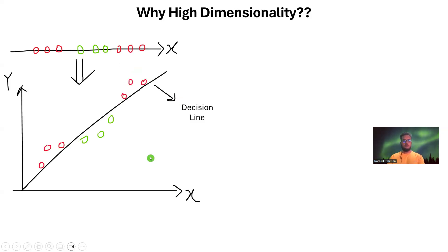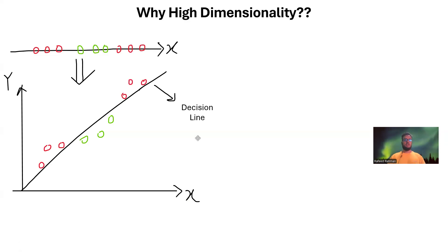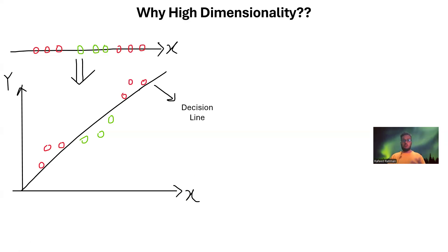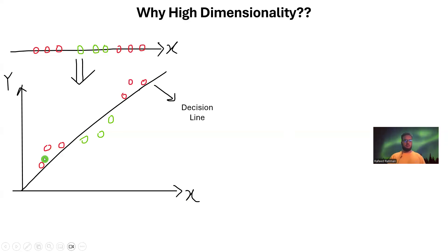Why don't we take these points to a higher dimension — a 2D space? How exactly we take the points to 2D space is something I'll discuss later. There is some transformation function that will allow us to do it — it could be x and x-squared, or x and 2x, or x and 0.5x; it can be many things. After transforming, the green points and the red points become linearly separable and can be separated using a simple line in 2D space.